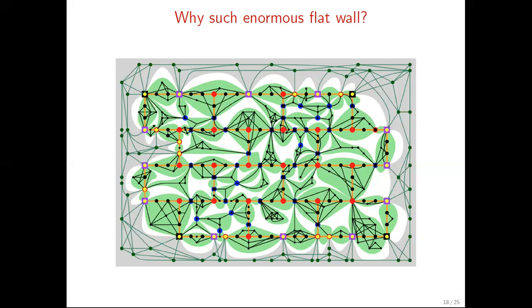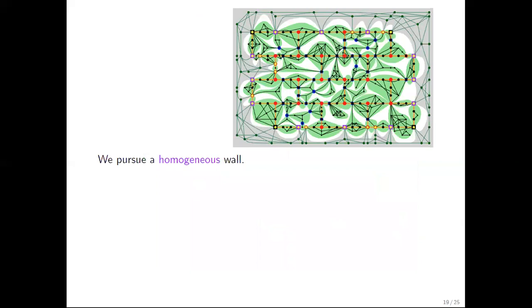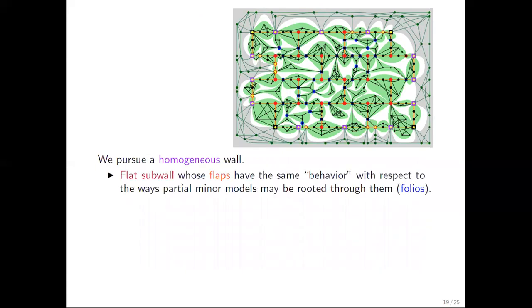To find an irrelevant vertex, we need to find an area inside the wall where the behavior of the flaps is more or less the same. And this wall is far from having this property. Thus, to tame this variety, we need to find a homogeneous wall. We need to find a flat wall, within the given flat wall, that is homogeneous, in the sense that graphs invade its flaps in a similar way. Or, a bit more formally, a flat wall whose flaps have the same behavior with respect to the ways partial models may be routed through them. Sometimes, this is called folios. Thus, we ask for flaps with the same variety of folios.